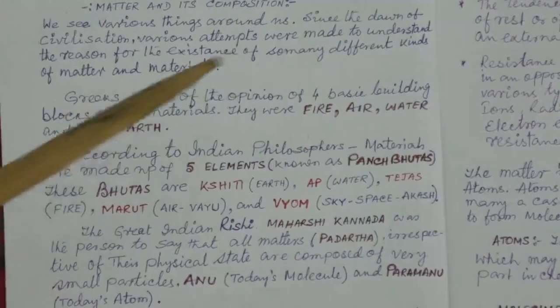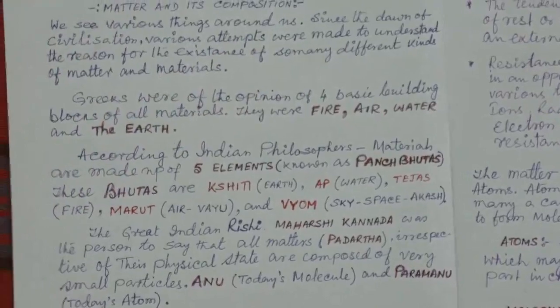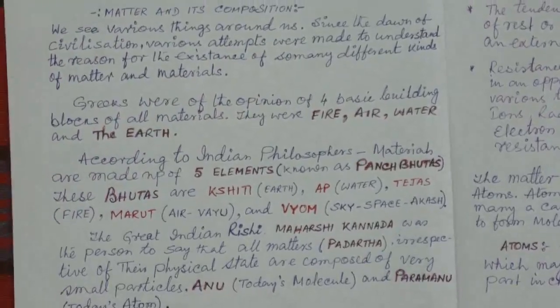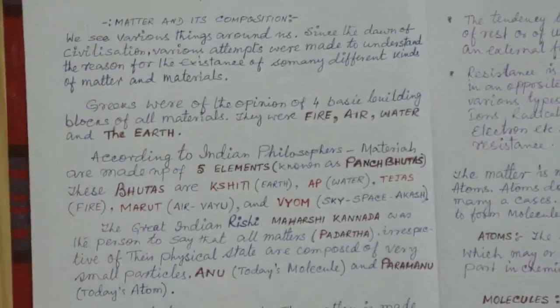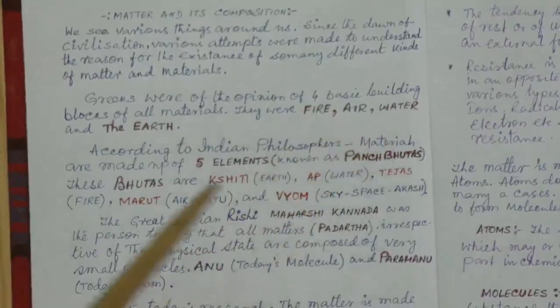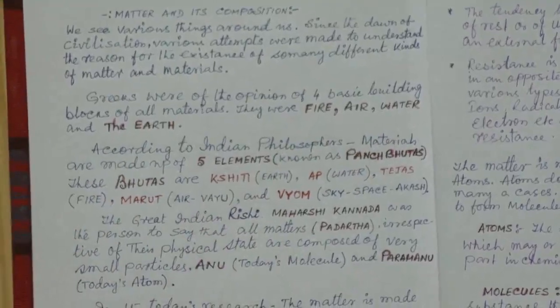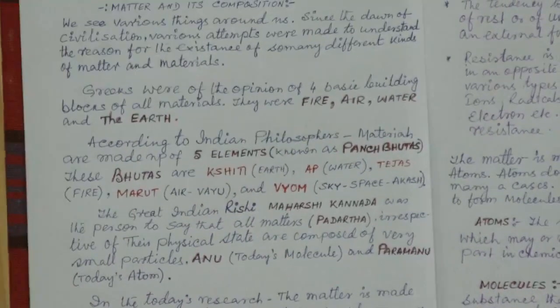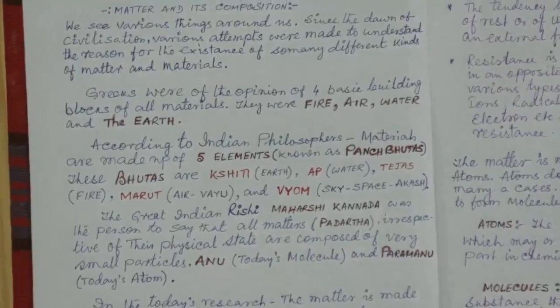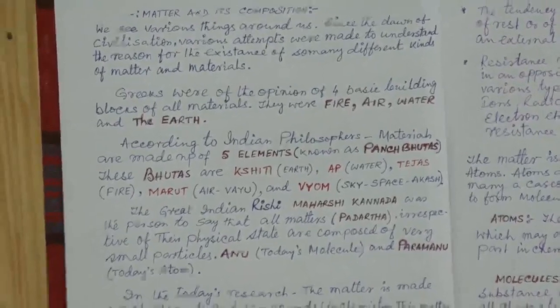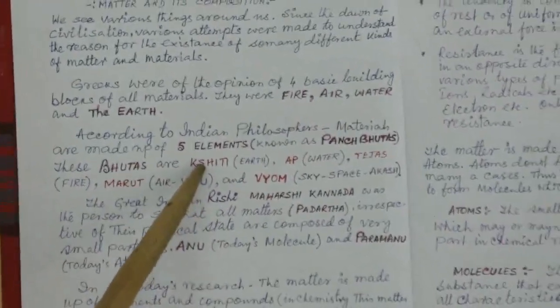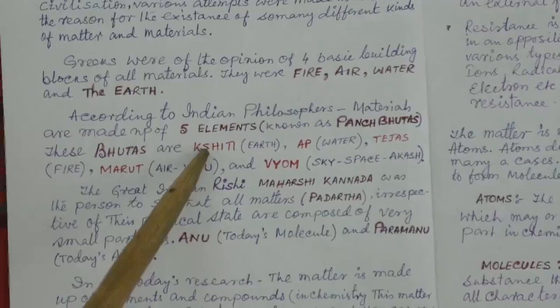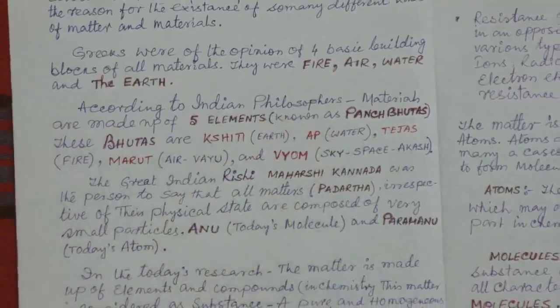These were considered by the Greek philosophers. Later on, at the same time, Indian philosophers, they considered five elements of everything. Everything is made up of five elements they considered and they named as Panch Bhutas. These Panch Bhutas are actually Prithvi means the earth, Jal the water, Tejas the fire.